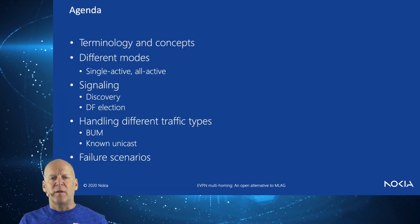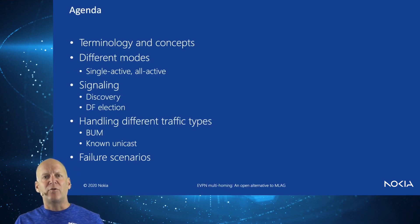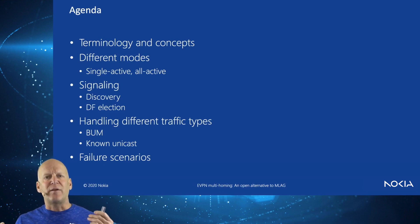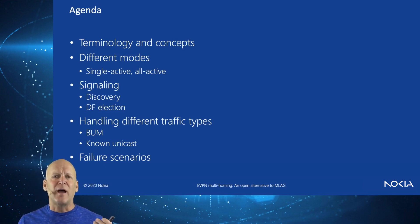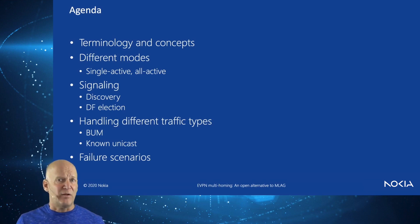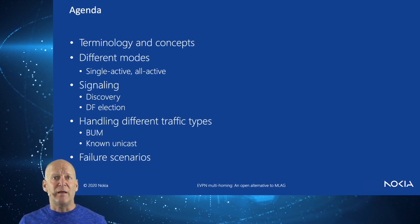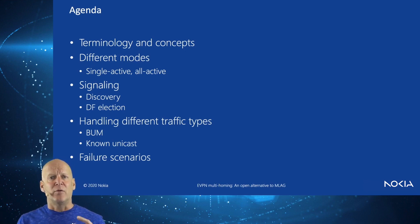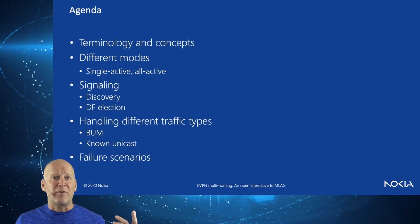Here's a bit of an agenda. First, we're going to talk about terminology and concepts. We're going to talk about the different modes of operation for EVPN multi-homing, whether it be single active or all active. We're going to talk about signaling, discovery, DF election, and handling of the different traffic types — broadcast, known unicast — and then failure scenarios on top of that.